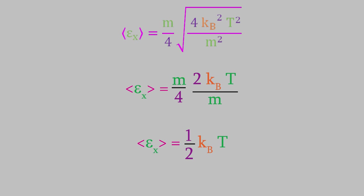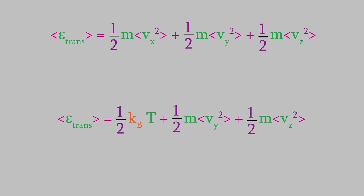And that simplifies to one half kb t. That's a nice simple result. It gives us the translational energy of a particle along the x-axis. We can plug that into our earlier equation for the translational energy. The terms for the y and z directions should give us the same result.